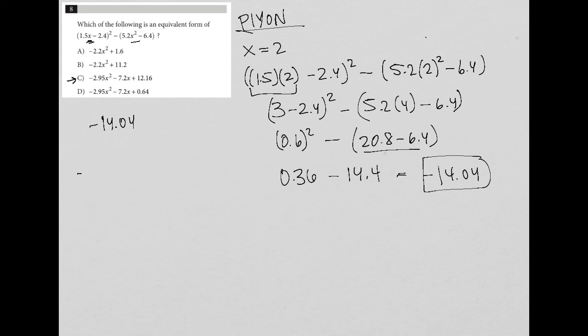So let's see, right? If I have negative 2.95 and I replace x with 2 squared minus 7.2, replace x with 2 plus 12.16.